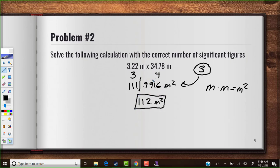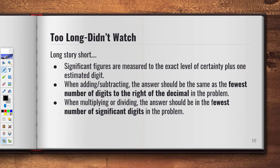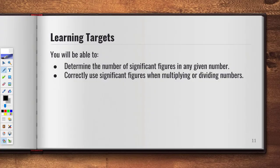The math is still the same — the only difference is we're accounting for digits of uncertainty to arrive at correct answers in terms of how many digits to use. These rules apply to every math problem you do for the rest of the school year, so make sure you know them well. When measuring, estimate one decimal place beyond the tool's precision. When adding or subtracting, use the fewest decimal places; when multiplying or dividing, use the fewest significant figures.